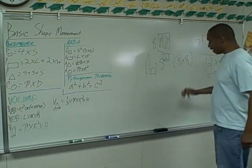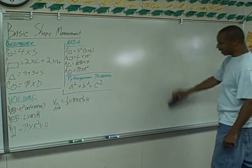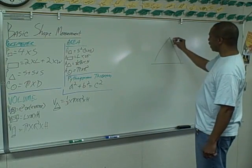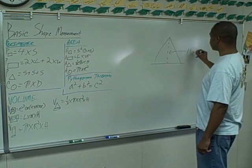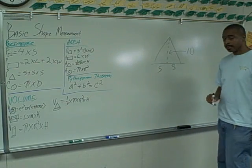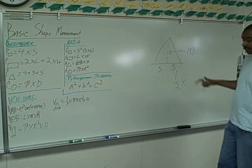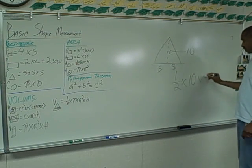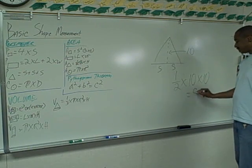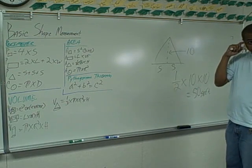For the area of a triangle, the formula is one-half times the base times the height. If the height of this triangle is ten and the base is ten, you have one-half times ten times ten. Ten times ten is a hundred, and half of a hundred is fifty square feet.